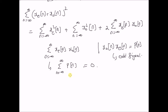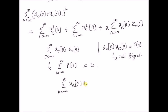That is, the sum of an odd signal throughout the real line, or in this case for all possible values of n, the sum of the odd signal is 0. Therefore, the third term is clearly 0. That is, the sum n equal to minus infinity to plus infinity of x_e of n times x_o of n is 0.